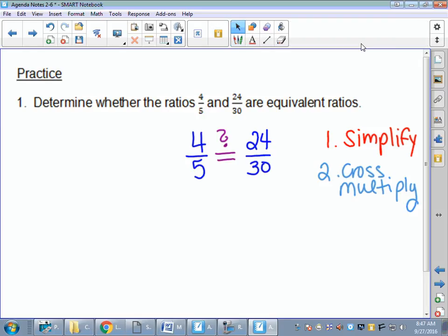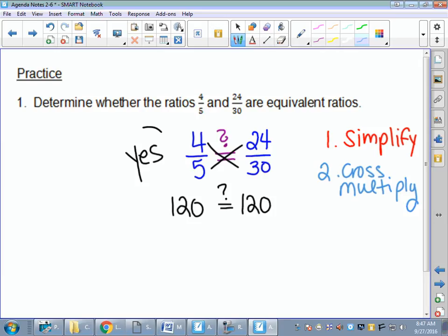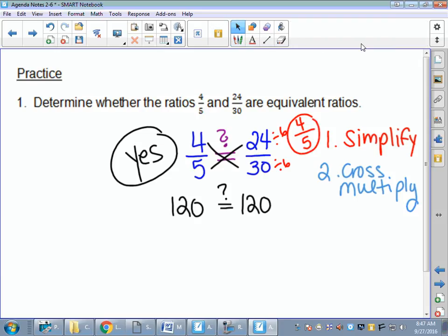I'm going to cross multiply first. If you cross multiply, multiply across, 4 times 30 is 120. 5 times 24 comes out to 120 as well. So yes, these are equivalent fractions, equivalent ratios. If we simplified, 4 fifths is in simplest form. 24 thirtieths, we could divide both by 6. 24 divided by 6 is 4, 30 divided by 6 is 5. They both simplify down to 4 fifths.